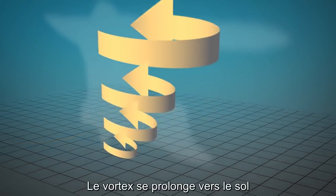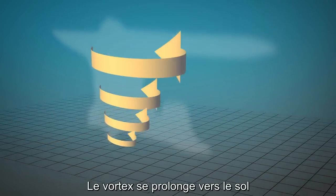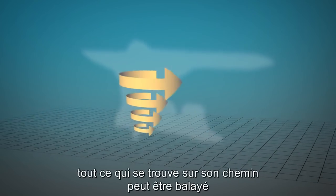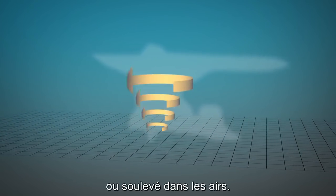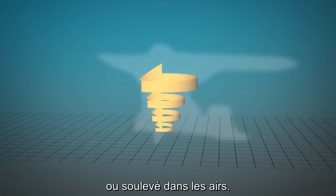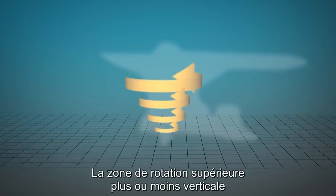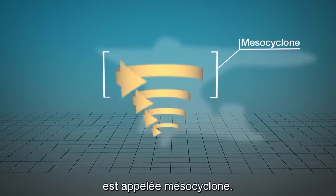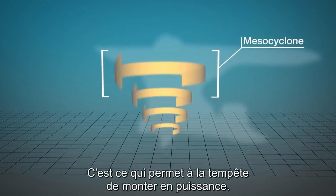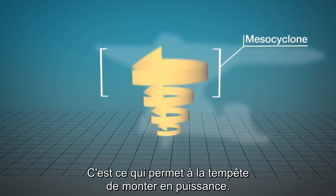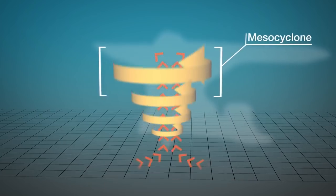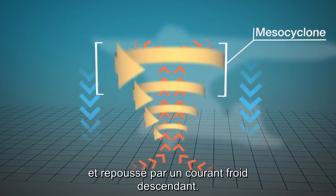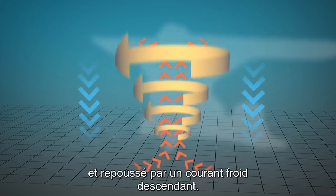The vortex extends toward the ground. As it picks up speed, anything in its path can be ripped apart or thrown in the air. Upper-level winds tilt the rotating updraft, called a mesocyclone.